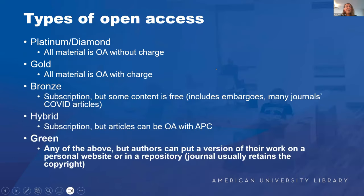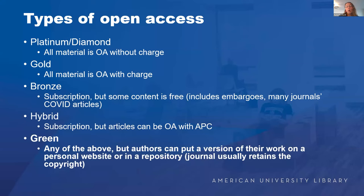Many of us have heard of open access, but it's often a much more complicated set of principles and workflows for making information open than people realize. Open access is most closely tied with journal articles, so most of the designations have arisen from different ways to make journal articles available—some at the article level and some at the journal level. It gets very confusing very quickly.